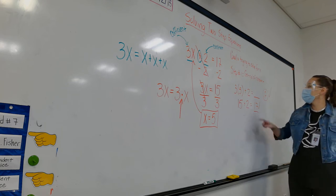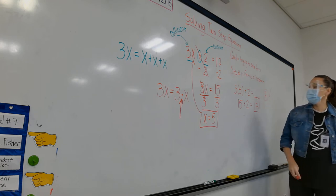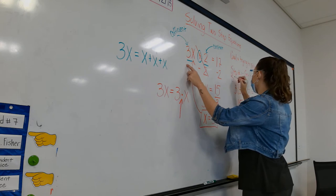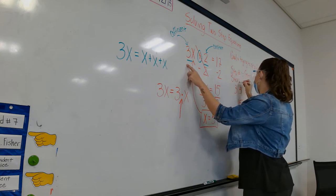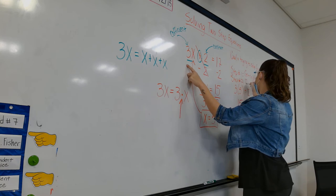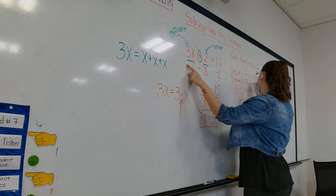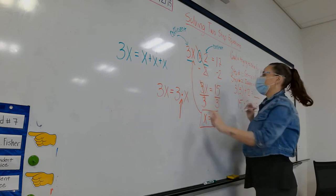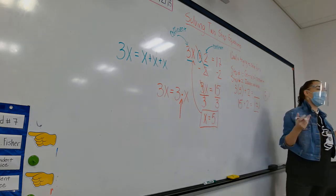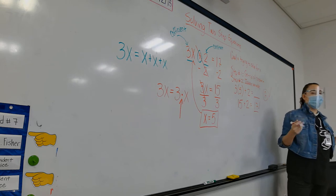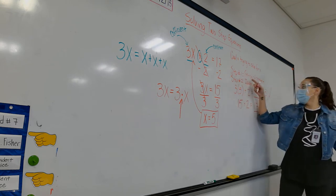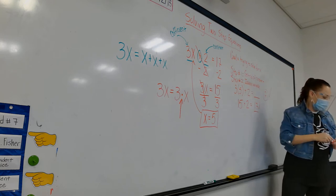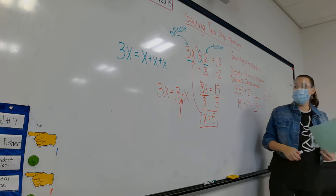Step 1 is to get rid of your constant. Step 2 is to isolate your variable. Isolate variable just means get the variable all by itself. Let's try another one.